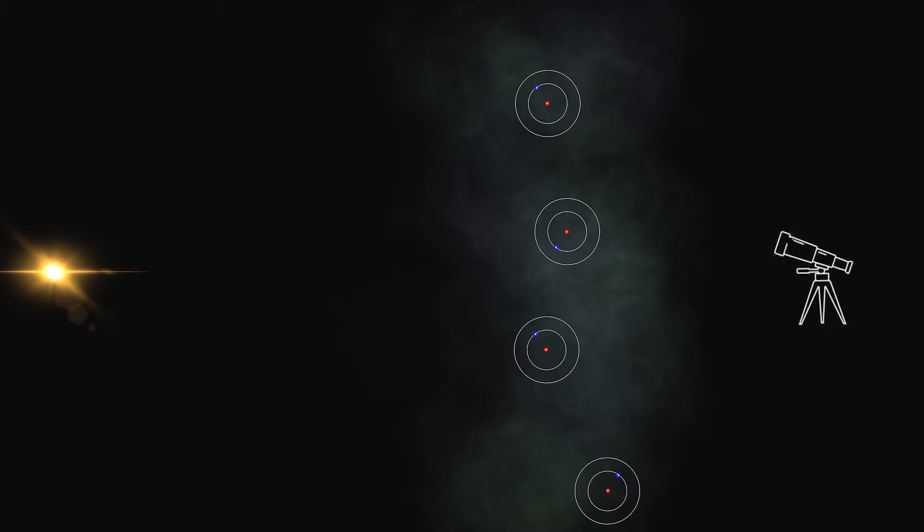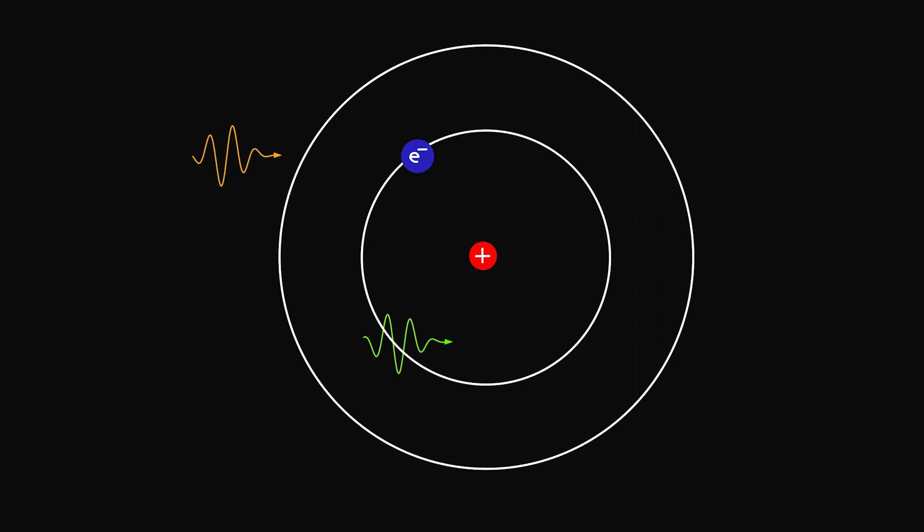But why do we have so many absorption lines in this region? For that, first imagine a source that is emitting photons of all wavelengths and a cloud of neutral hydrogen gas. A hydrogen atom will only absorb a photon of wavelength 1216 angstroms and it is nearly transparent to other photons. So if we plot the flux versus wavelength, we expect to observe a dip in the flux at 1216 angstroms and the rest will remain the same as the source.